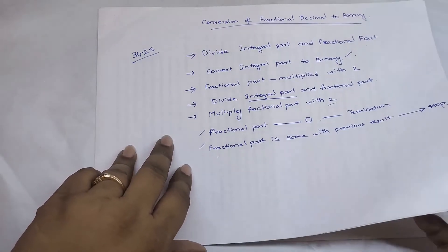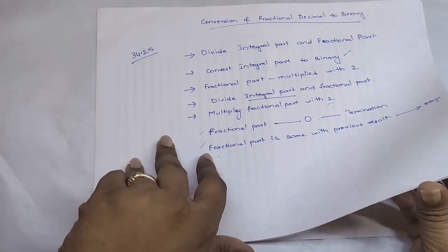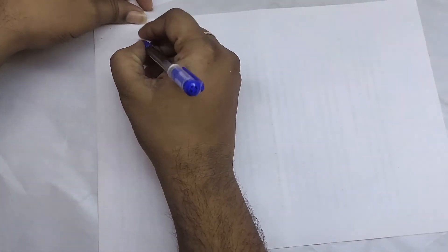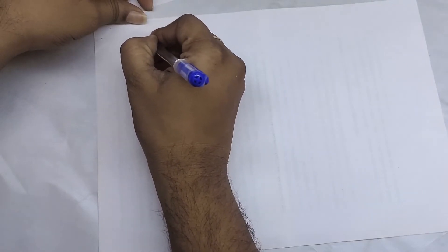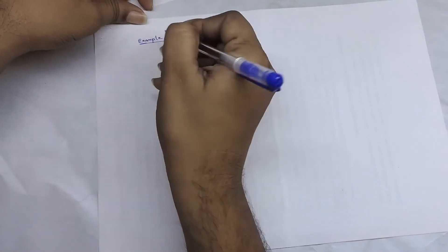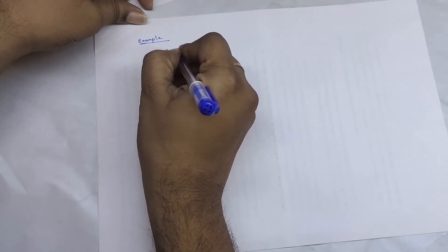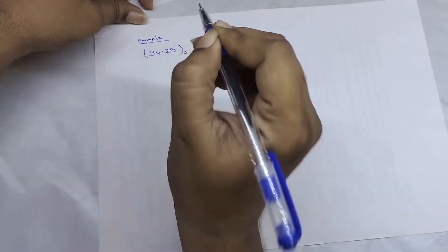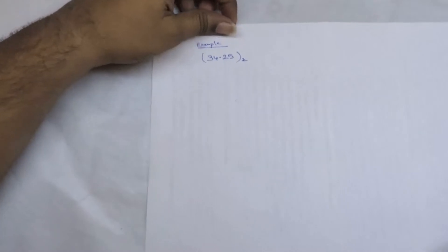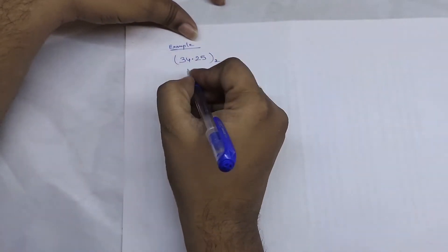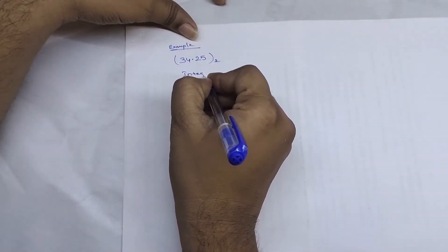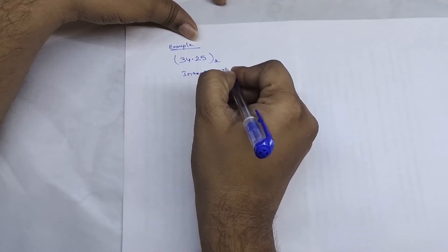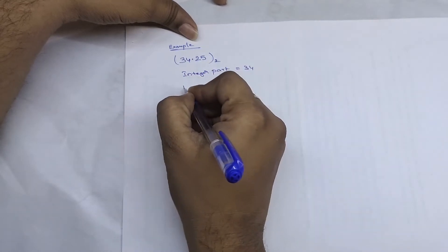Now we'll go with an example — seeing this example your doubts will be clarified. First example: let us take 34.25, which should be converted into binary. First, divide the integer part and fractional part. The integer part is 34 and the fractional part is 0.25.